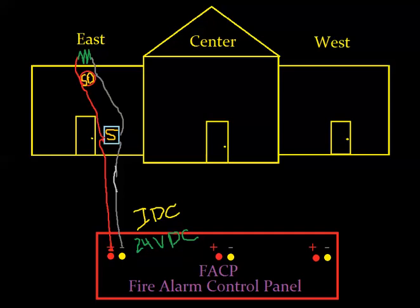Welcome back. In the first video, we talked about an initiating zone on a conventional fire alarm panel and how what would happen if a wire came open, if one of the wires came off of a device, what happens in a normal state, how the current flows through the resistor, and we touched on what would happen if it went into alarm, if somebody pulled a pull station or set off a smoke detector.